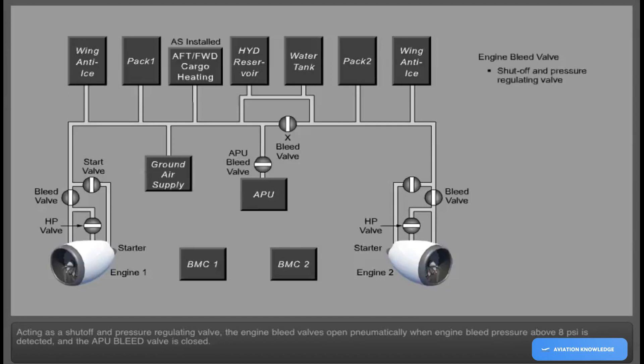Acting as a shut-off and pressure-regulating valve, the engine bleed valves open pneumatically when engine bleed pressure above 8 psi is detected and the APU bleed valve is closed.